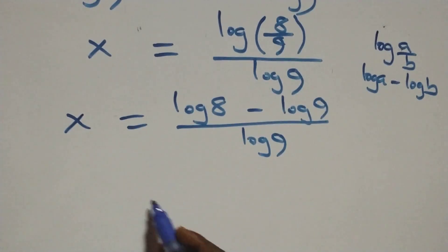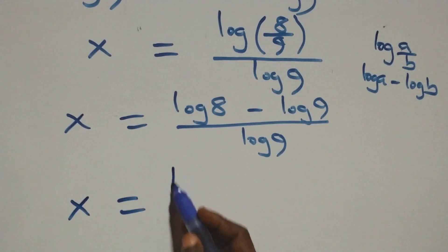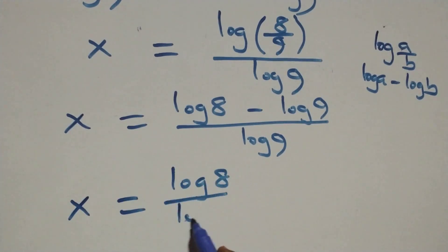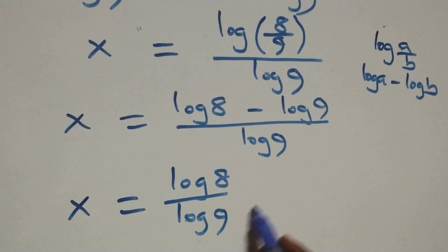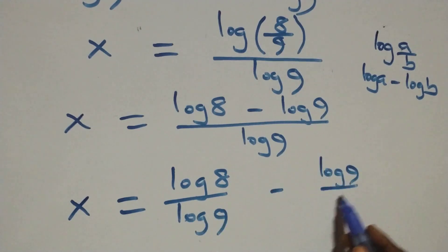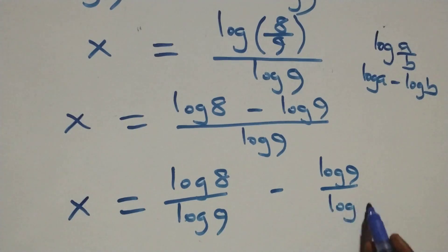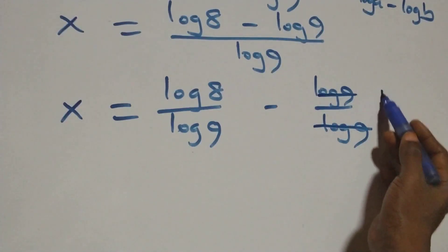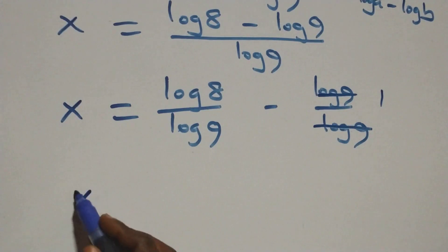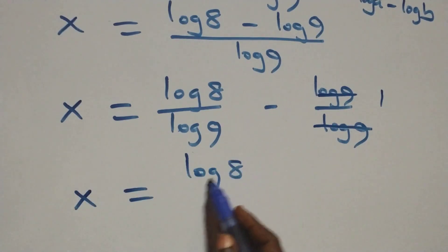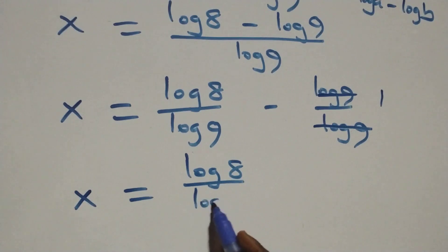We separate this into two fractions and we have x equals log 8 over log 9 minus log 9 over log 9. Here log 9 cancels each other, one left here, which implies x equals log 8 over log 9 minus 1.